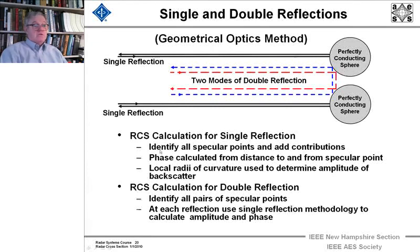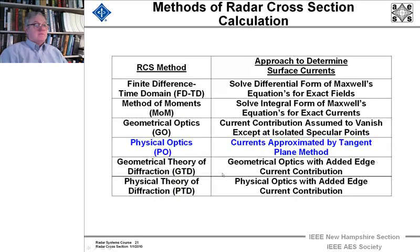What you do is you first identify all specular points and add their contributions. Phase is calculated from the distance to and from the specular points, and the local radii of curvature are used to determine the amplitude of the backscatter. For double or even triple reflections, identify all pairs of speculars, calculate each amplitude using single reflection method to calculate the amplitude and phase, and add them all up.